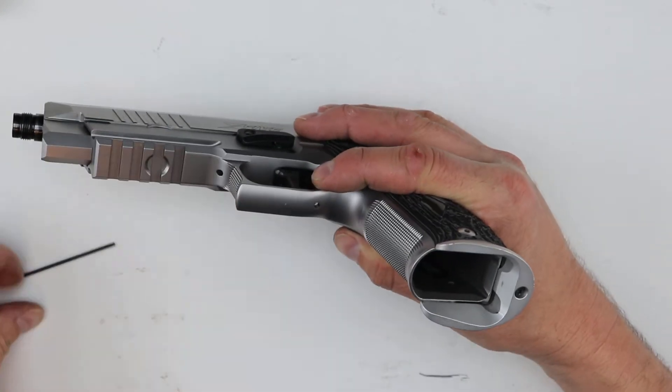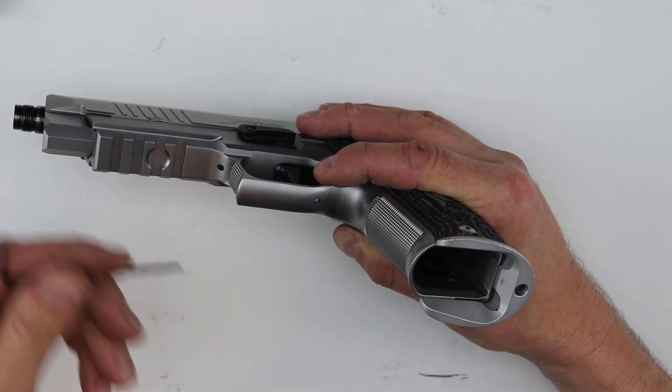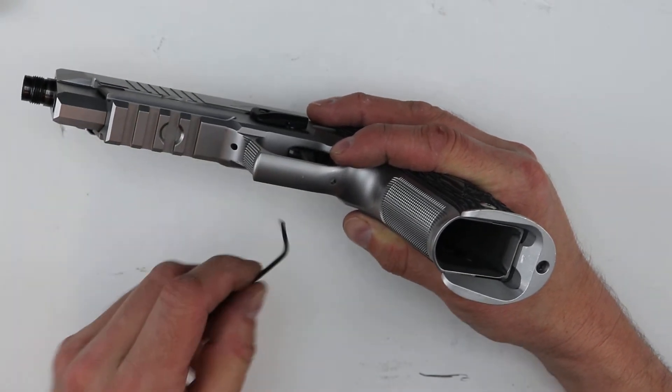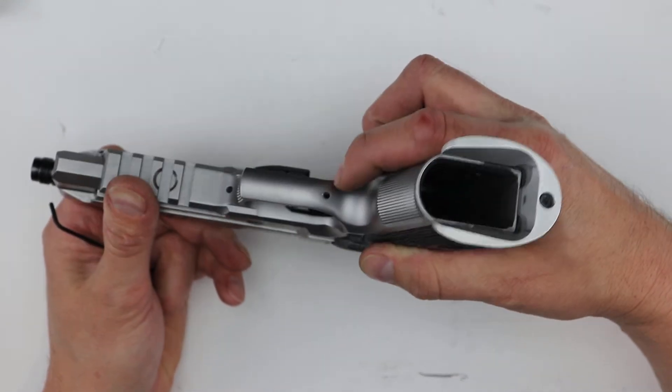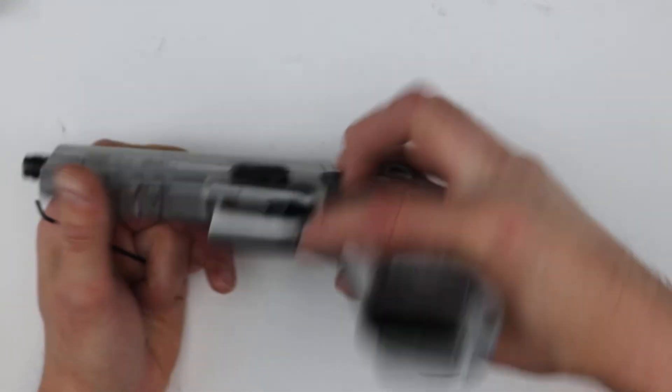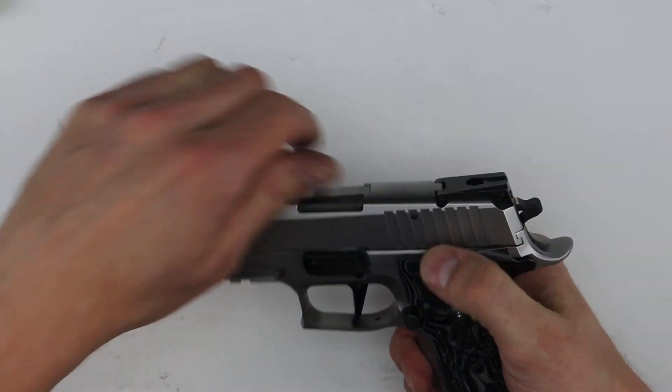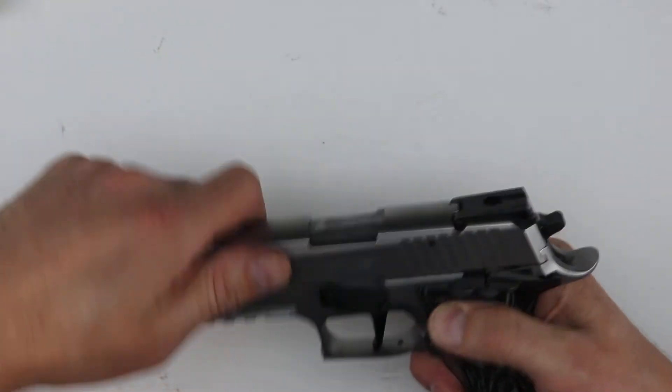The second one is actually the trigger stop. It is actually the trigger stop, and then the third one for the pre-travel is actually on the inside of the gun.